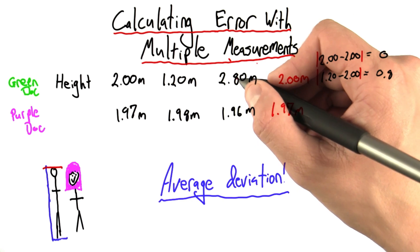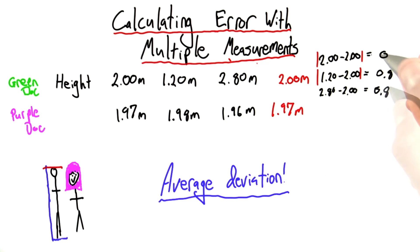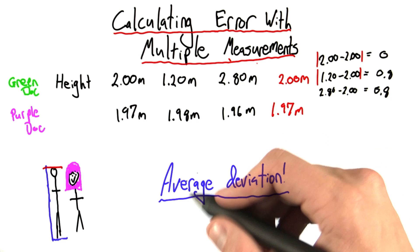For this third measurement of 2.8, I get again a deviation of 0.8. Now for my three measurements, I have deviations of 0, 0.8, and 0.8. That's the deviation part. What about the average?